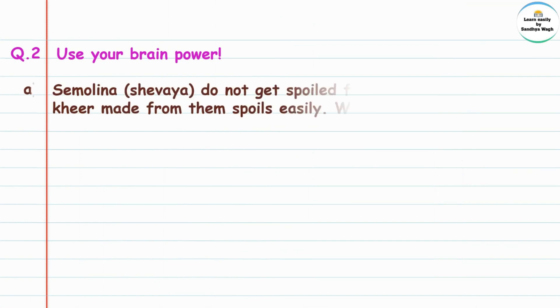Question 2: Use your brain power. Semolina does not get spoiled for a very long time, but khir made from it spoils easily. Why is this so?